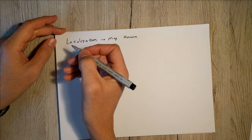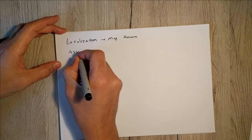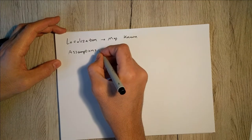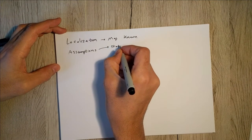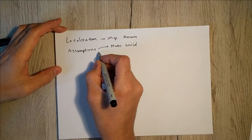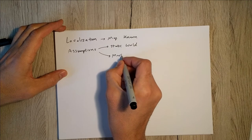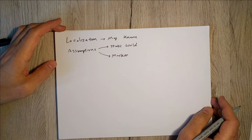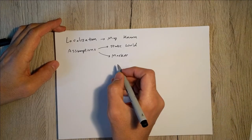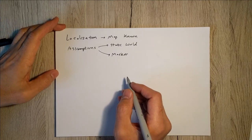Usually there are several assumptions, and each assumption gives us a different approach. The common assumptions are: the world is static — it doesn't change while the robot is moving around trying to localize itself — and the Markov assumption, which means measurements are only dependent on the given state, not the previous state. I recommend watching my other tutorial on the Bayes filter for more on the Markov property.